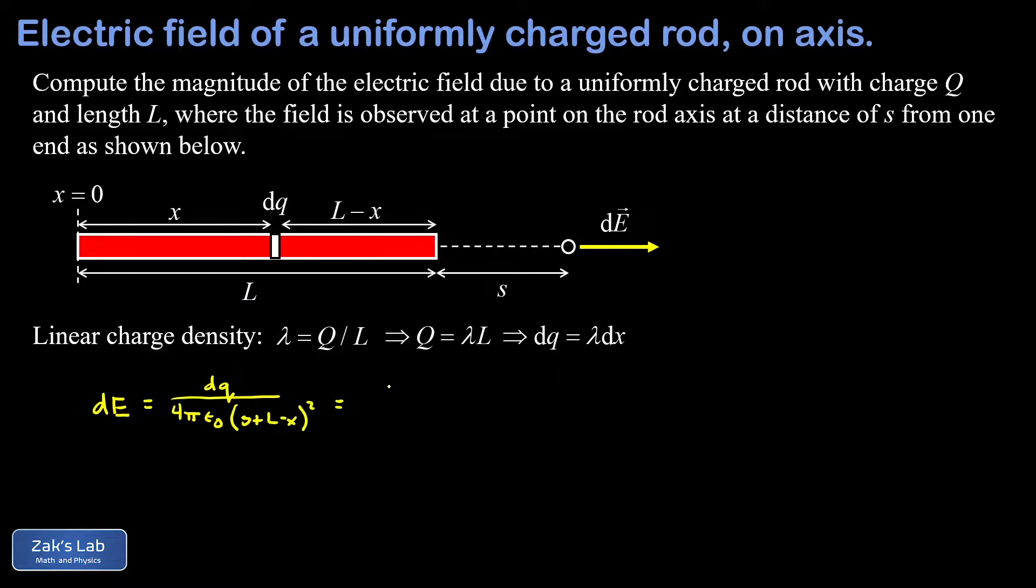Now we can replace the dq with lambda dx. That's the linear charge density multiplied by the length of that little segment. So we have lambda dx over 4 pi epsilon zero times the quantity s plus L minus x all squared.